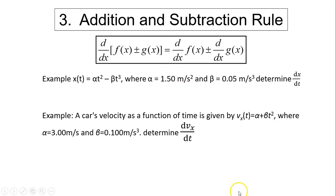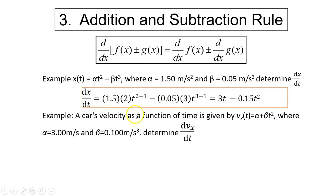Next is the addition and subtraction rule. When you have two functions added or subtracted, you simply take the derivative of each term separately. Example: x(t) equals alpha times t squared minus beta times t cubed, where alpha equals 1.5 and beta equals 0.05. To find dx over dt: that's 1.5 times 2 times t to the 1, minus 0.05 times 3 times t to the 2, which simplifies to 3t.